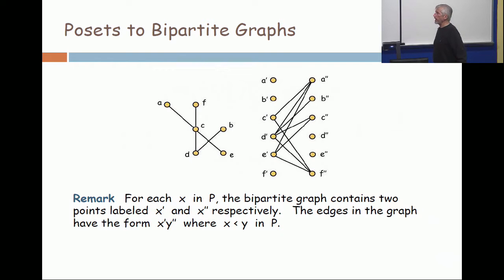For every element of the poset, in the bipartite graph, I have an a prime and an a double prime. So if I have a in the poset, I have a prime and a double prime.